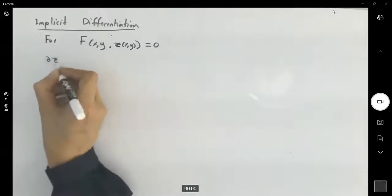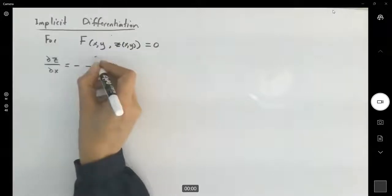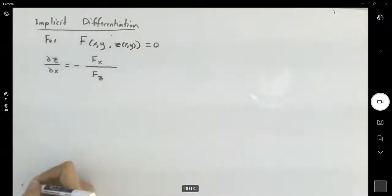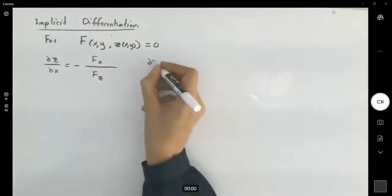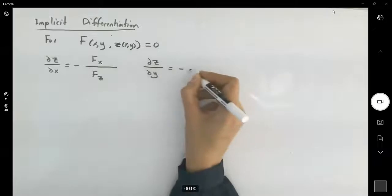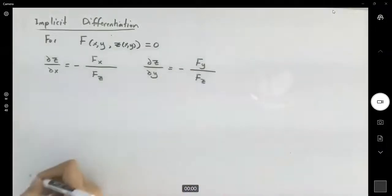For example, partial derivative of z with respect to x is going to be minus f of x divided by f of z. Partial derivative of z with respect to y is going to be minus f of y over f of z.